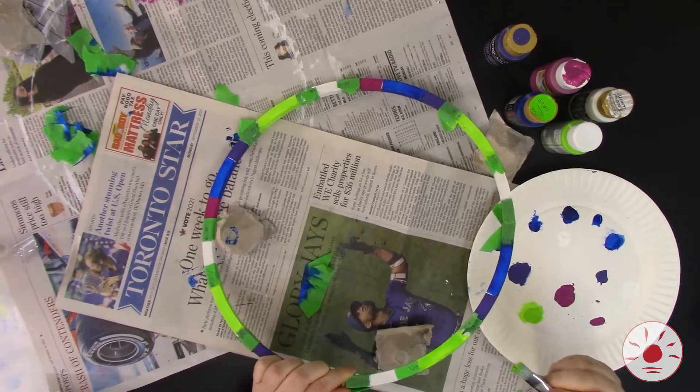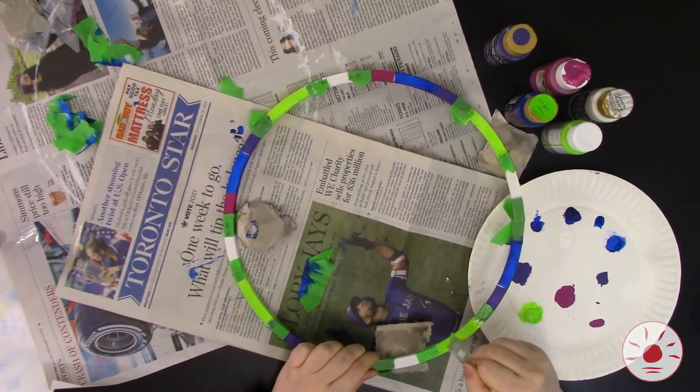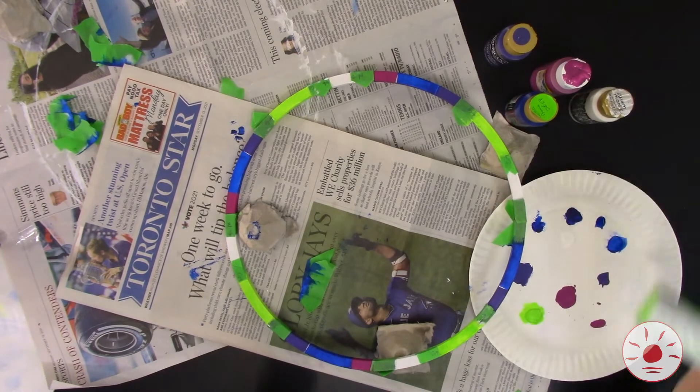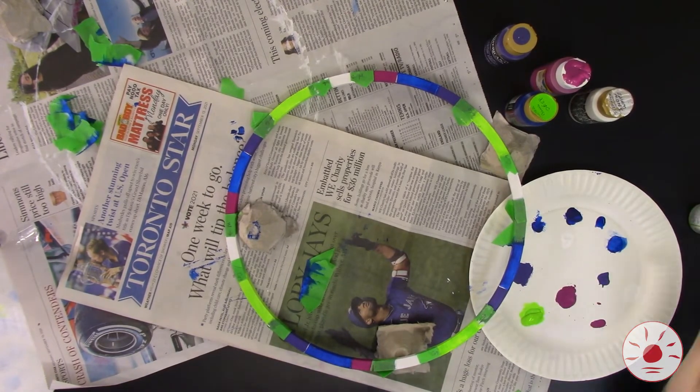I've also taped off the edges of my sections with a little bit of painter's tape, but I did find that the paint bled underneath anyway, so this step is optional. It may help you get a crisper edge, but it's totally up to you.